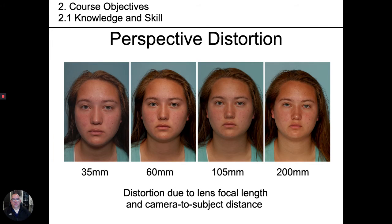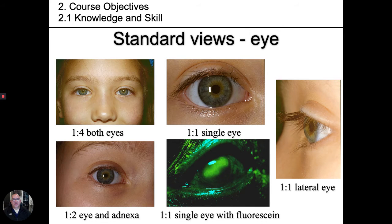You will learn how the lens focal length affects perspective and can distort an image. Standard views, such as taking x-rays, is a medical photography principle where, when possible, specific views at a specific reproduction ratio are taken so that, over time, comparison views will be consistent.